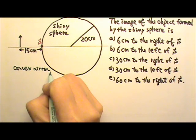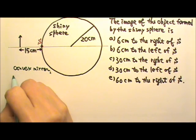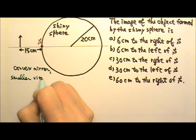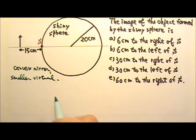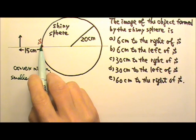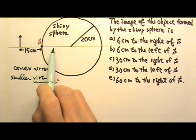A convex mirror can only give us smaller virtual images, which means because it's a virtual image, the image must be formed behind the mirror where no light gets to.